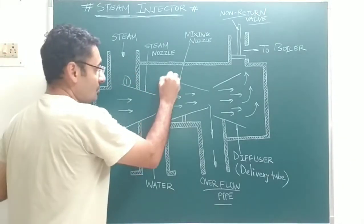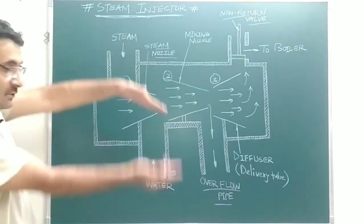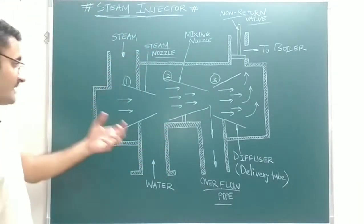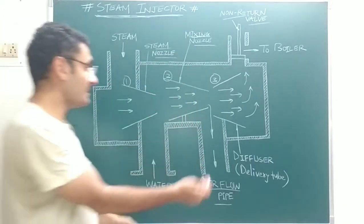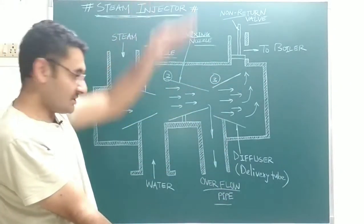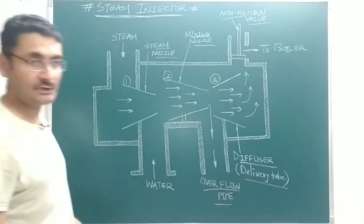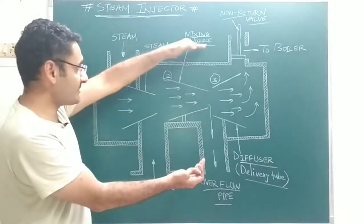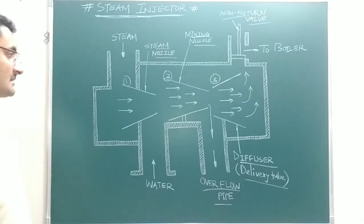There are three cones inside the steam injector. The first cone is the steam nozzle, which is a converging nozzle. The second cone is the mixing nozzle, which is also a converging nozzle. The third cone is the opposite — a diverging nozzle, also called a diffuser or delivery tube. So: first is the converging steam nozzle, second is the converging mixing nozzle, and third is the diverging diffuser.